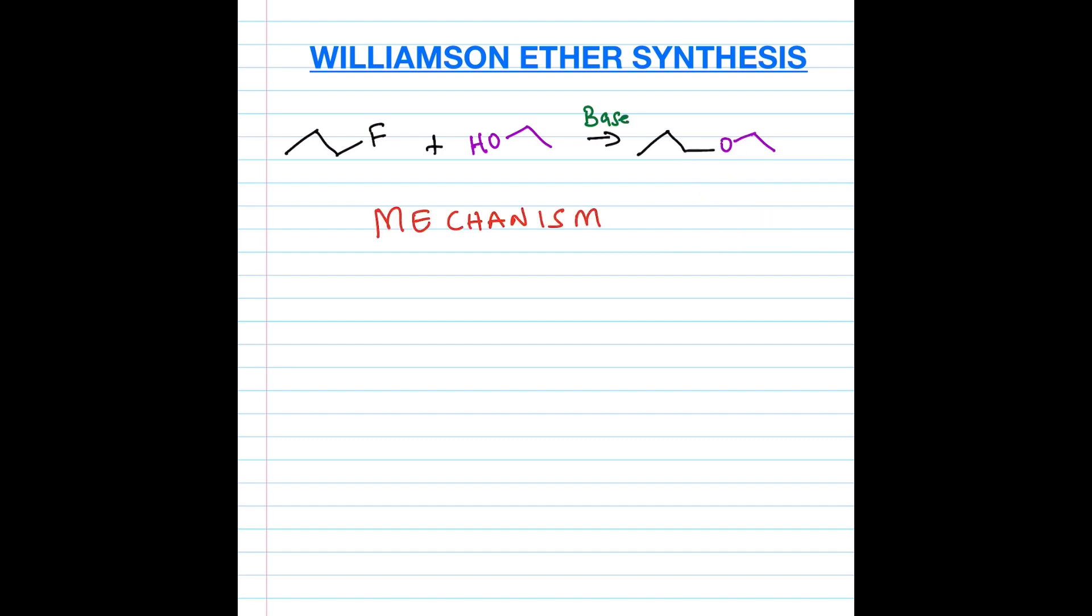Now let's look at the mechanism of the Williamson ether synthesis. The first step involves abstraction of the OH proton by the base, and the base here could be KOH, NaOH, potassium hydroxide, sodium hydroxide, KH, or sodium hydride. If we're using KOH, then the active base will be OH-, and that will abstract a proton from the alcohol, and then these two electrons will flow to oxygen to form an O-, and therefore you end up with water plus the alkoxide intermediate. So the first step leads to the formation of the alkoxide intermediate.